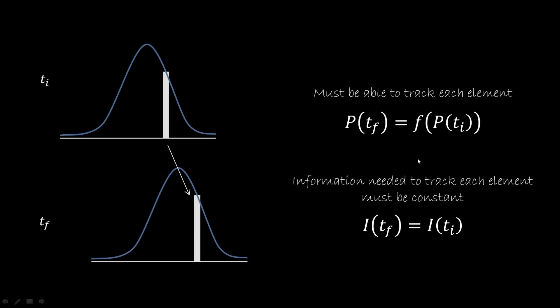But this is not enough. Each element has to be as easy to track in the final state as in the initial state. So the amount of information that I need to specify to identify the initial element in the initial distribution has to be the same in the final distribution. And this information has a precise definition in terms of informational entropy.